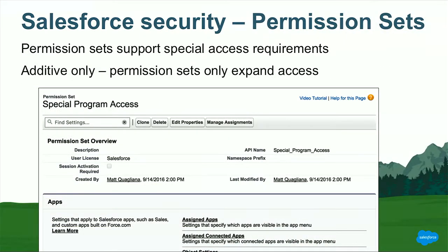In addition to profiles, Salesforce also offers something called permission sets. Permission sets are a way for you to extend a profile. You might have a profile that applies to most of your users, but there's a class of users that need some additional permissions. You don't want to create a second profile because you'd end up with a lot of profiles. So instead, you might create a permission set. The thing to remember about permission sets is that they only let you expand access — you apply them to give a user additional access beyond what the profile would give them.